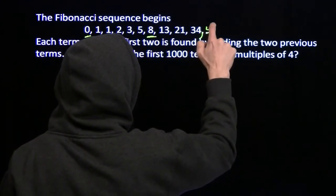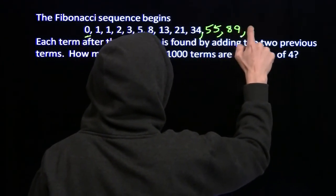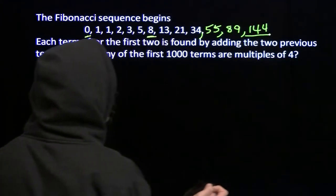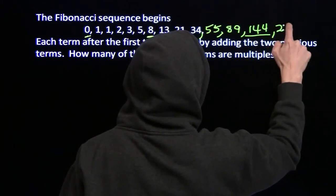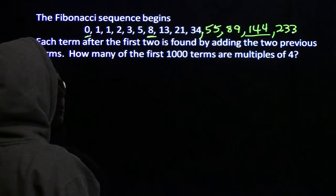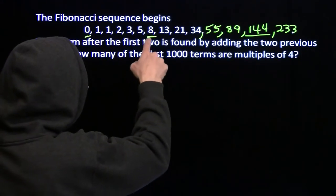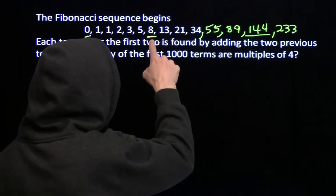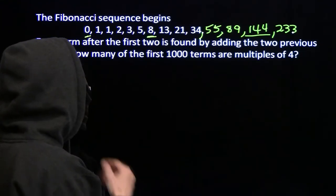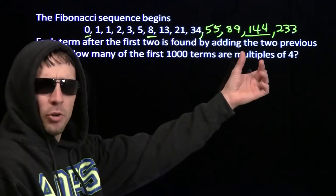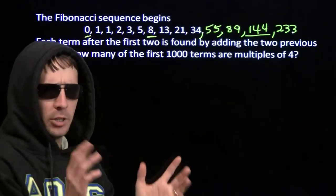Let's just keep listing more terms. I've got one multiple of 4 right there, and another multiple of 4 right there. 21 plus 34 is 55, 34 plus 55 is 89, 55 plus 89 is 144 — we have a winner, there's another multiple of 4. 89 plus 144 gives us 233. There's one here, then I skip 5 terms and get to another one, then skip 5 terms and get to another one. Is that going to keep happening?